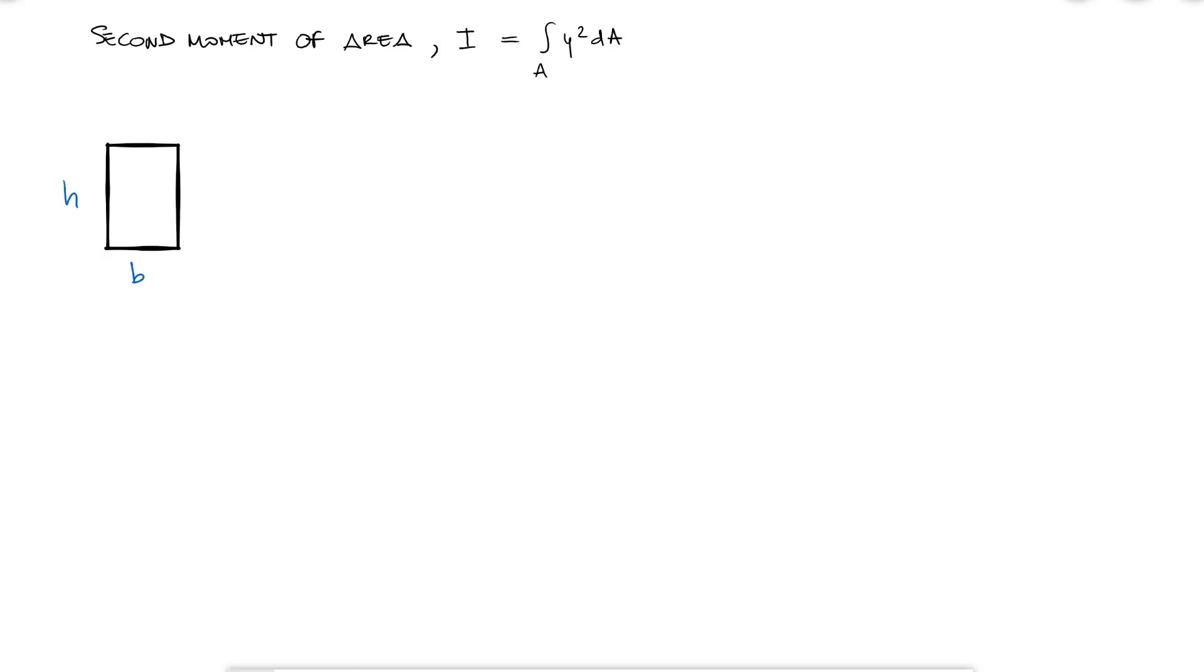If I want the second moment of area about the centroid, or the neutral axis, I would substitute my area integral as two integrals, one for x and one for y, where the limits of x are 0 to b and the limits for y are minus h over 2 to h over 2.